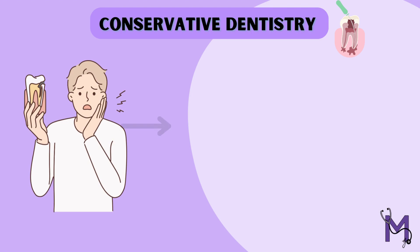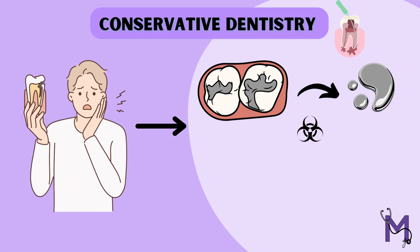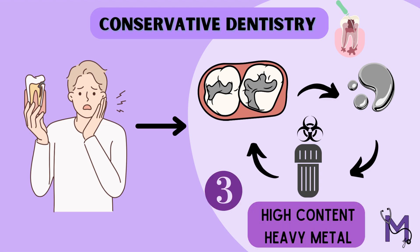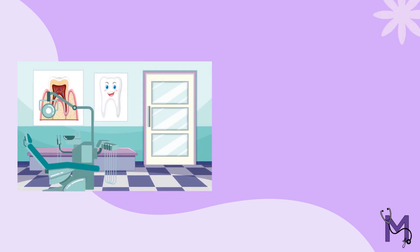Next, in the conservative dentistry department, when a patient walks in with a cavity, there are times when we use silver amalgam as a choice of filling. This contains mercury as one of its primary components. The remnants of this material after the procedure are categorized as waste with high content of heavy metal.